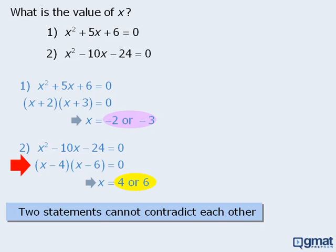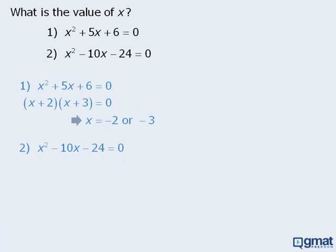Can you spot the mistake? Well, the problem is right here — we incorrectly factored the left-hand side. So let's try that again. When we factor the left-hand side correctly, we can see that if x minus 12 times x plus 2 is equal to 0, then x must equal 12 or negative 2.